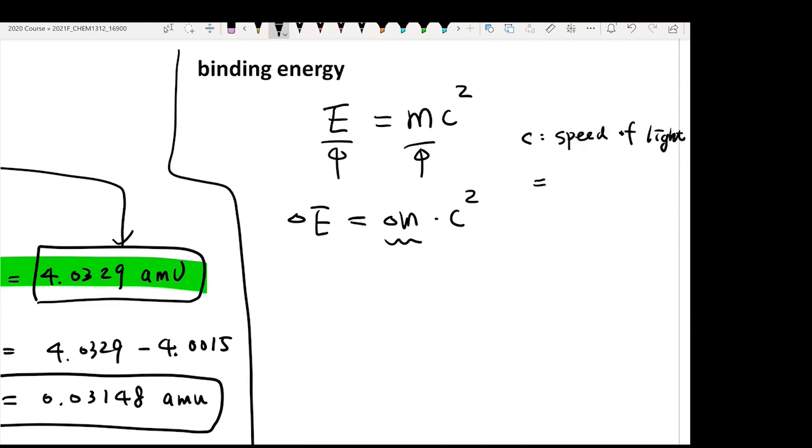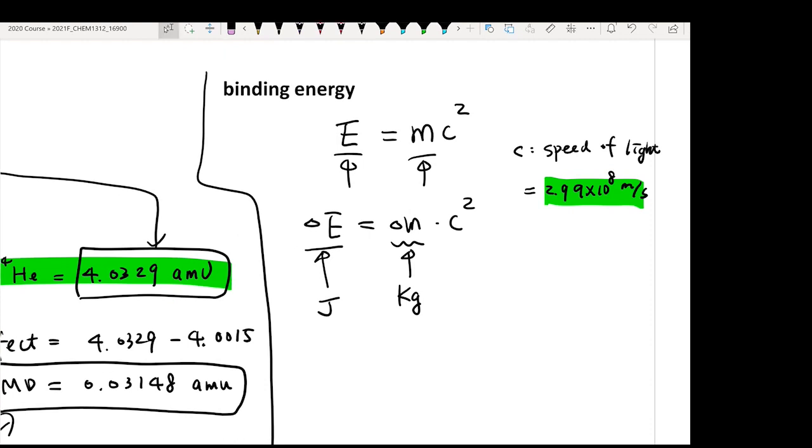It's going to be a constant 2.99 times 10 to the 8th power meter per second. These things will be provided, so you don't need to memorize this value. But you need to know that c is the speed of light. The delta m needs to have a unit of kilogram so that your delta E has a unit of joule. Right now you know the mass defect is 0.03148 amu, not kilogram. Before you can put this number in, you need to do one more conversion. 1 amu is equal to 1.66 times 10 to the negative 27 kilogram. This conversion will be provided before you can plug it into the equation.